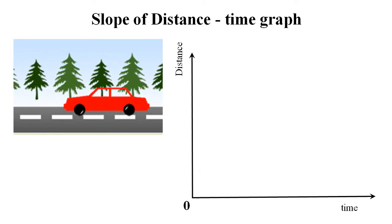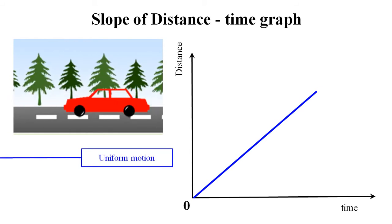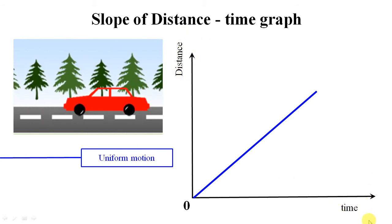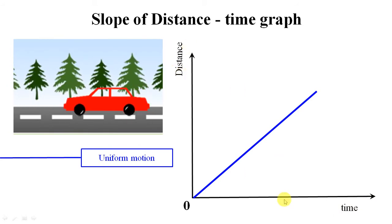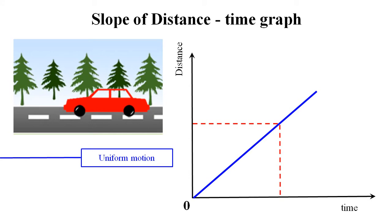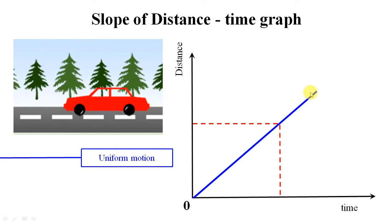How do we find the slope, and what exactly is it? Slope is the ratio of change in y-coordinates to change in x-coordinates. Here the y-coordinate is distance and the x-coordinate is time, so it's the change in distance over a certain amount of time. To find it we take two lines — one horizontal and one vertical — for a body under uniform motion whose distance-time graph is a straight line.